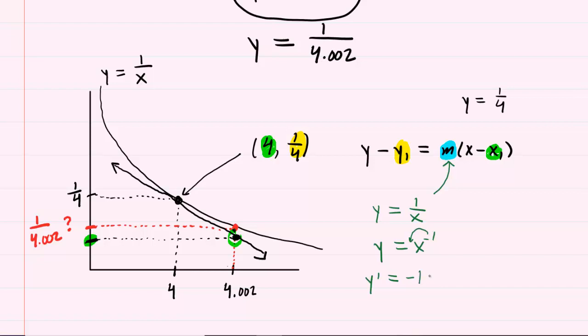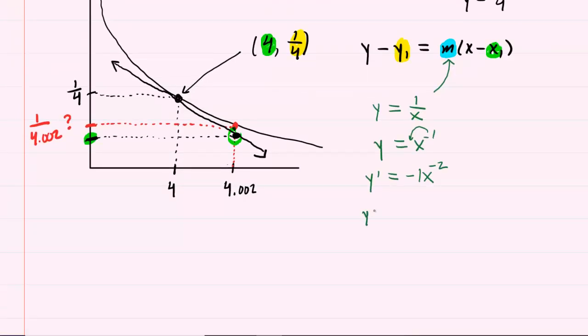We'll have negative 1x. And then we subtract 1 from the exponent to make negative 2. Let's rewrite this so that it is in terms of positive exponents. So we'll have negative 1 over x squared.